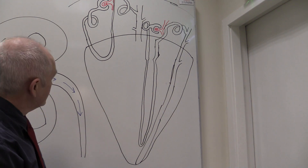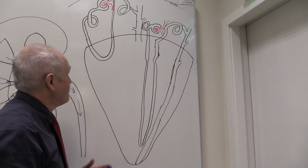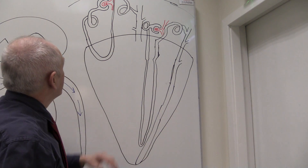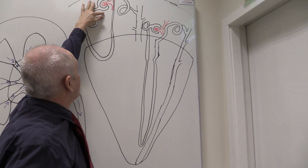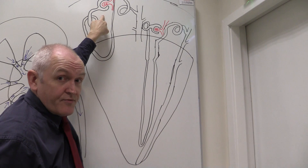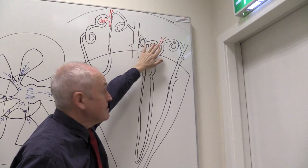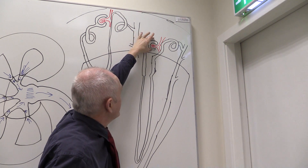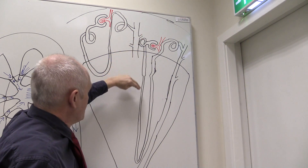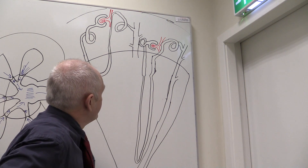So that's a juxtamedullary nephron. The renal corpuscles — the glomeruli and Bowman's capsule — are always in the cortex. In the case of the cortical nephron, the loop only dips a little way down into the medulla. In the case of the juxtamedullary nephron, the corpuscle is in the cortex but lower down next to the medulla, and then there's this long loop of Henle. The purpose of this is that it allows concentrated urine to be formed through this long loop.